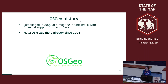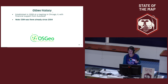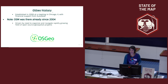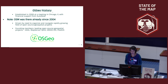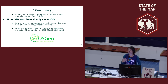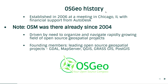Looking at the history, you can see the old logo. OSGEO was established in 2006 at a meeting in Chicago with financial support from Autodesk at that time. And just a note — OSM was there already, founded in 2004. This meeting was driven and organized by some companies and projects: GDAL, MapServer, QGIS, GrassGIS and PostGIS were already there. People from these communities ran the meeting and founded OSGEO.